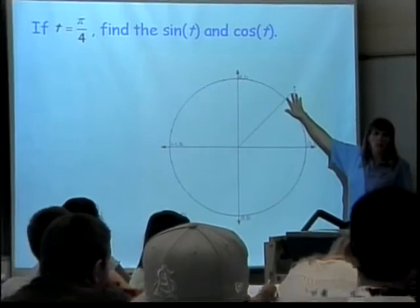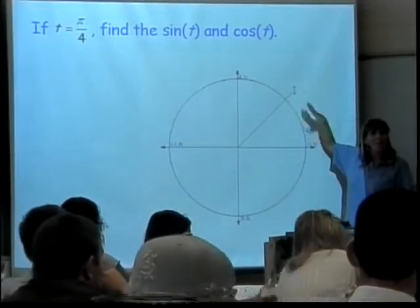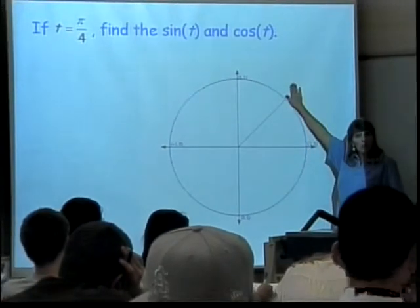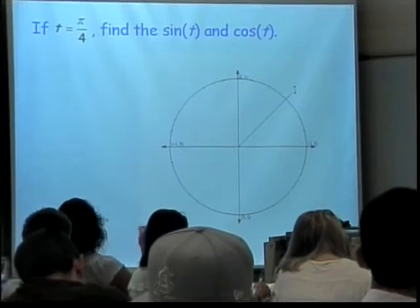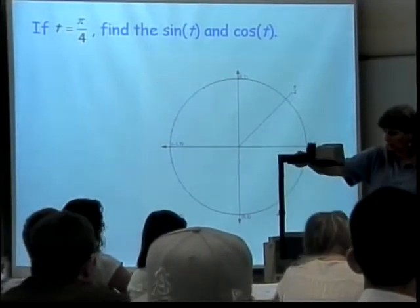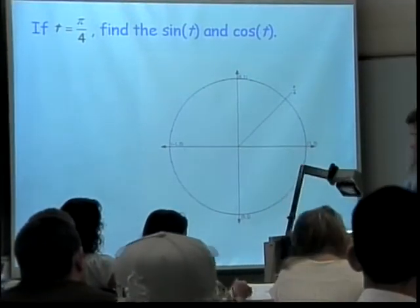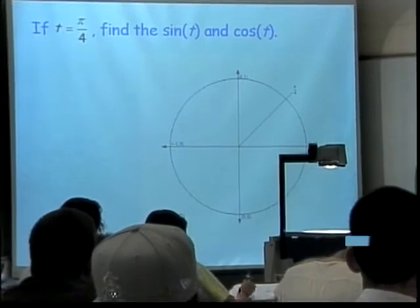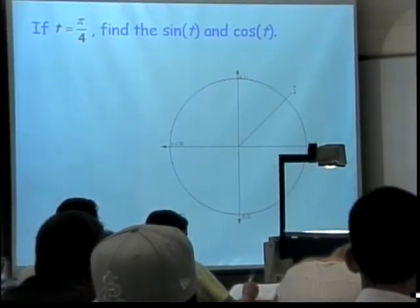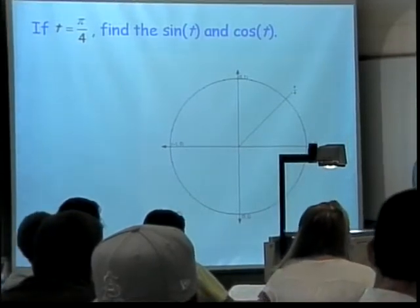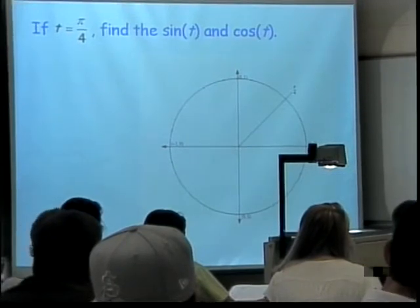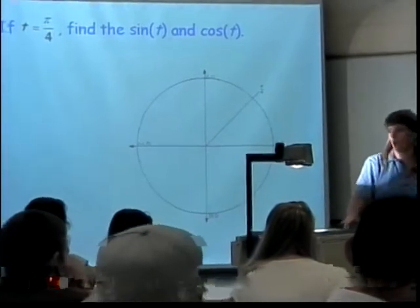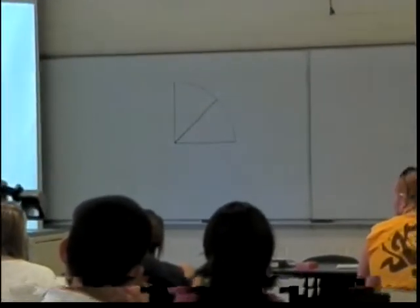But those are the nice ones. We need to be able to get to the in-between ones. The three in-between ones that are important and that we'll be expected to know are pi over four, pi over three, and pi over six. We're going to start with pi over four. I'm drawing this on the board now because the overhead overheated last class. To avoid that, we'll draw the important part and then turn off the overhead so it won't overheat before we get to pi over six and pi over three.